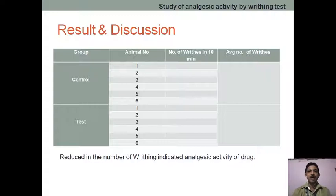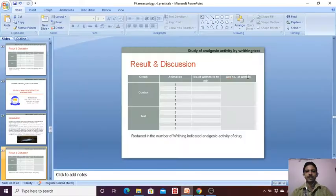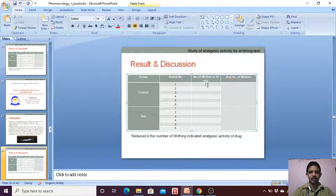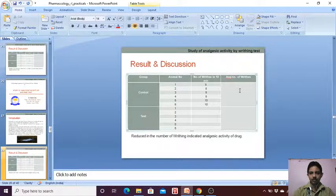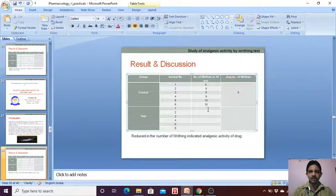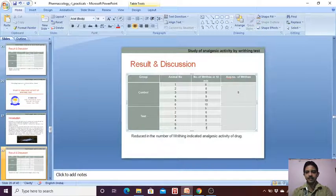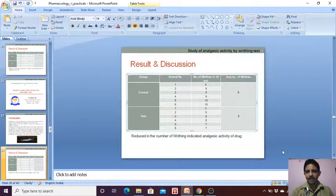In this particular experiment, for example, I am putting some hypothetical values: 8, 8, 9, 9, 10, 10 — so the average comes to 9 for the control group. After the test drug, the values may be 5, 6, 5, 6, 7, 7 — so the average comes to 6.